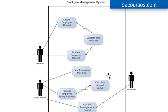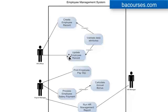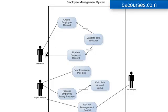Then the other thing you need to consider is your Actors — these are the end users that will be using your system. In our case, we have three different ones. We've got an HR Officer that wants to be able to create and update employee records. We show interactions with a simple straight line to the use cases. The payroll manager wants to process employee payments and print employee slips. Note that the HR Officer can also potentially process employee salary payment — actors can share functionality like they would in a normal system.